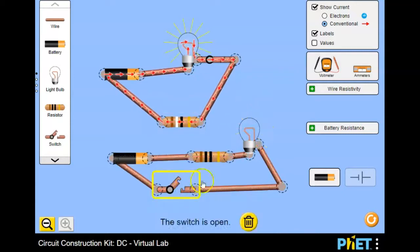If I open a switch, it'll tell me the switch is open and you'll see that the electrons stop flowing through.